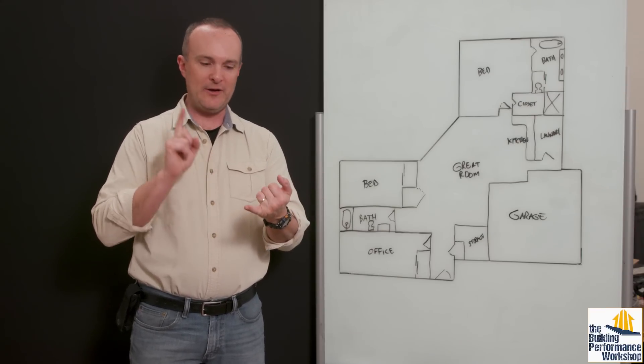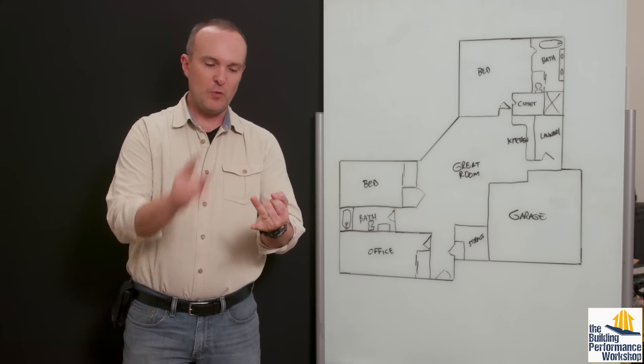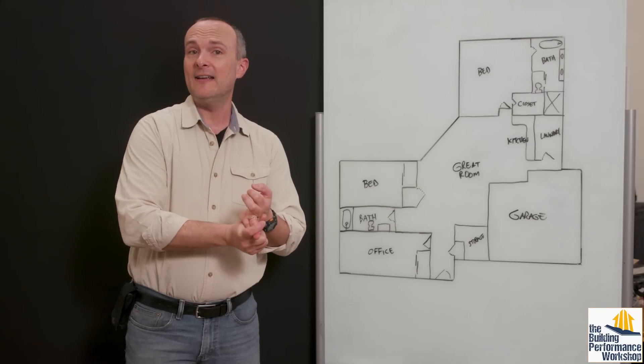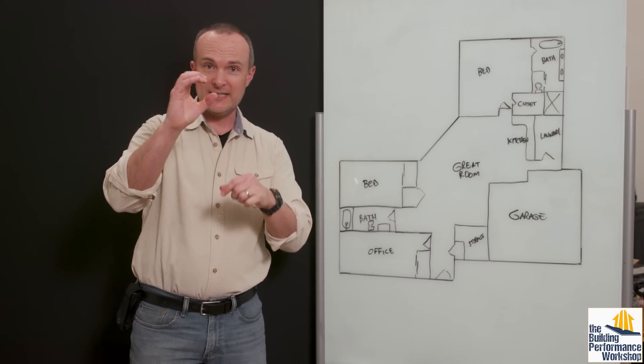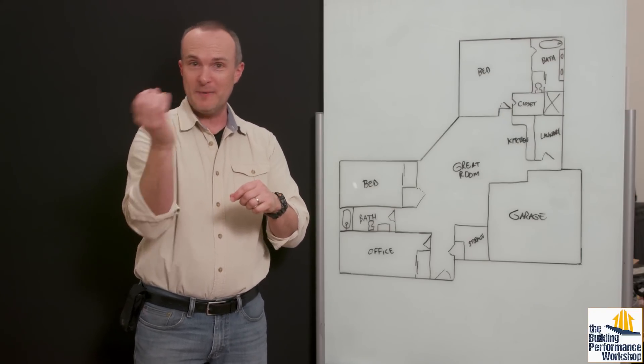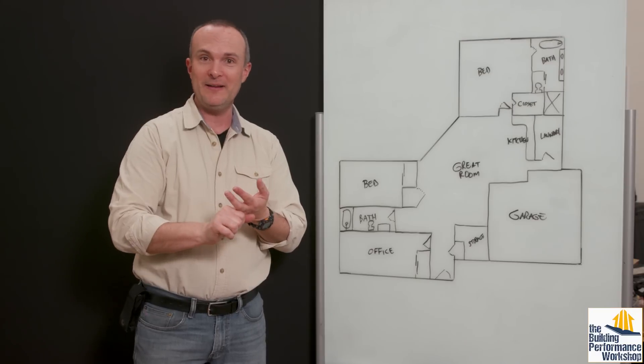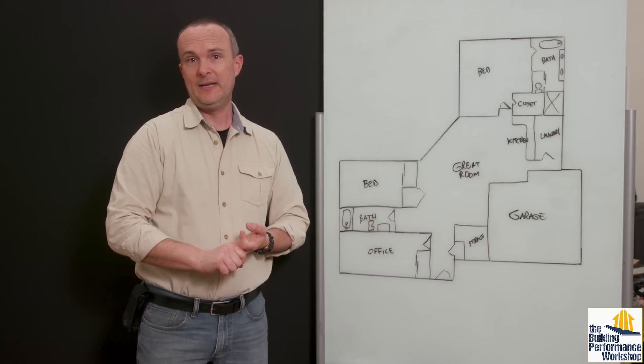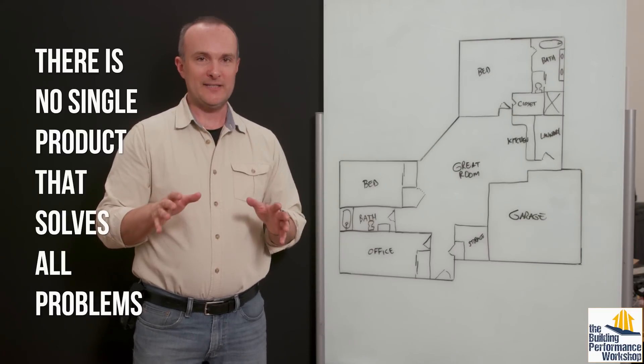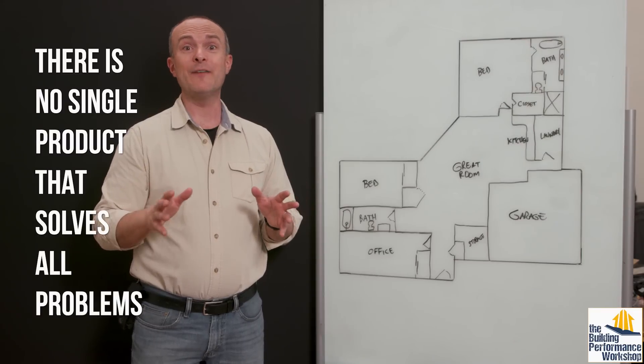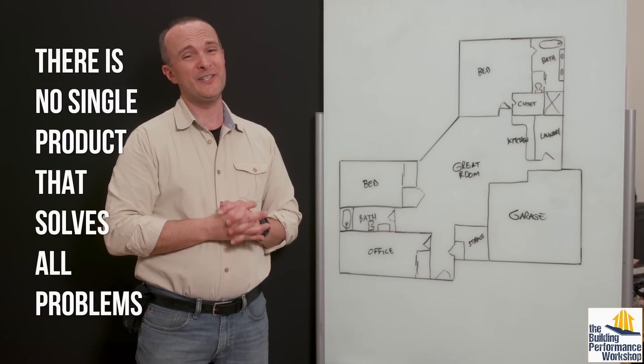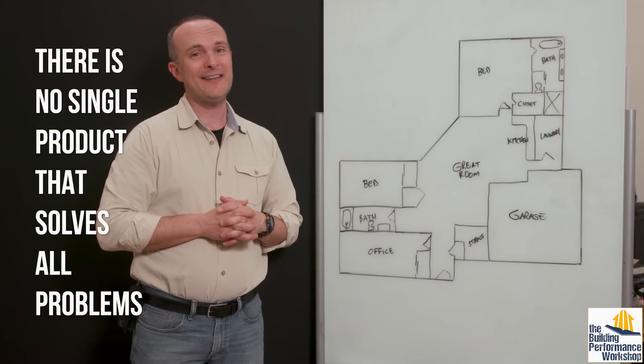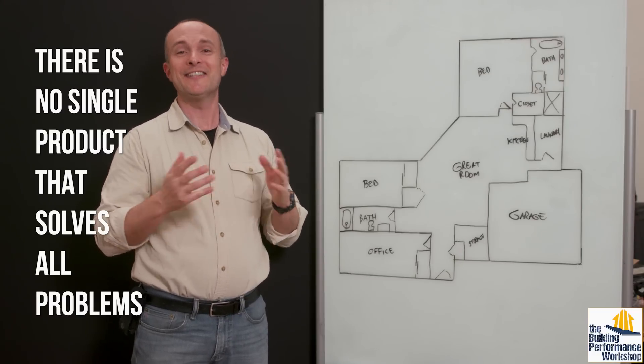So when I hear about ductless mini splits, when I hear about high velocity air conditioning systems that are these little tubes like pool hose, basically that you're running around that are going to be making your life easier, when I hear about radiant flooring in cold climates, that's the dream. We all know that that's what's advertised on television, but we all know also if you stop to think about it, that can't be how the world works. It's a system.